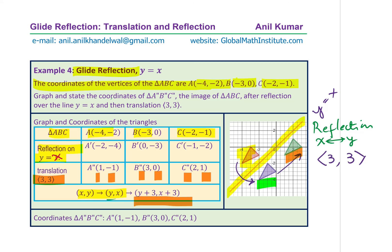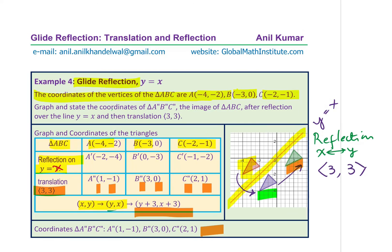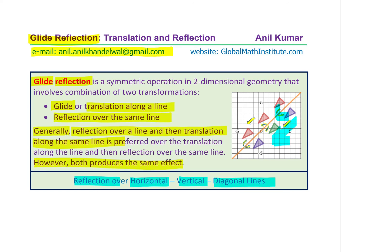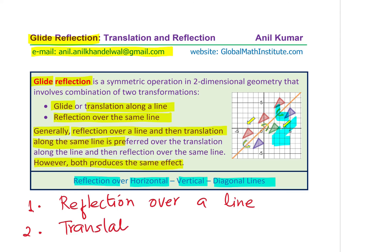Once you do this, you get the coordinate points of the final triangle. We get A double dash (1,-1), B double dash (3,0), and C double dash (2,1). So that is how we do it. In glide reflection we are doing two operations: one is reflection over a line, and the second is translation along the same line — that is very important. We have taken four cases to make a very general and useful description. Feel free to write your comments, share your views, and if you like and subscribe to my videos, that would be great. Thanks for your time and all the best.